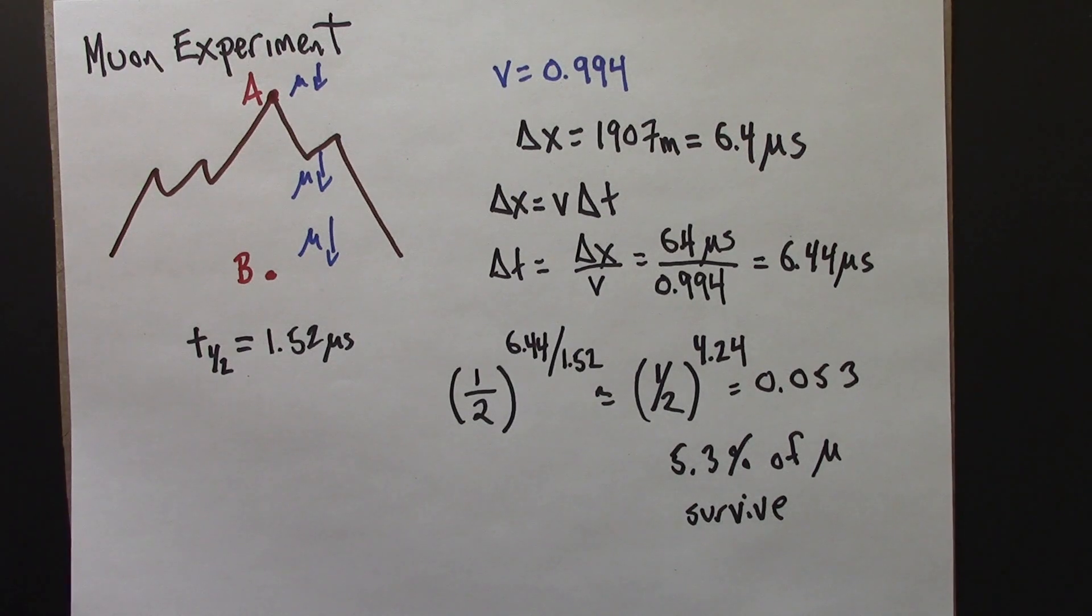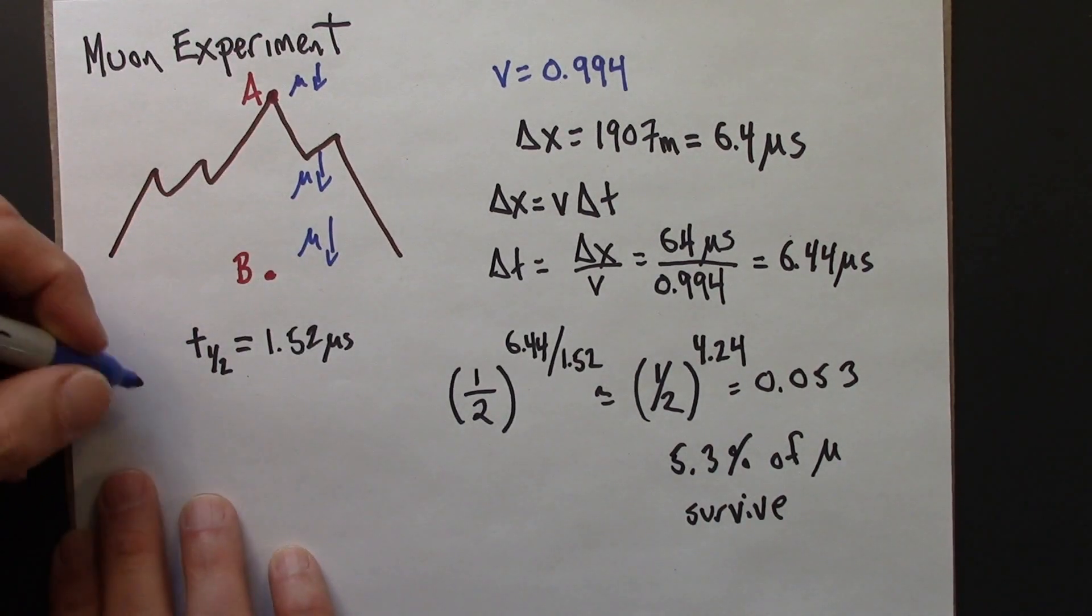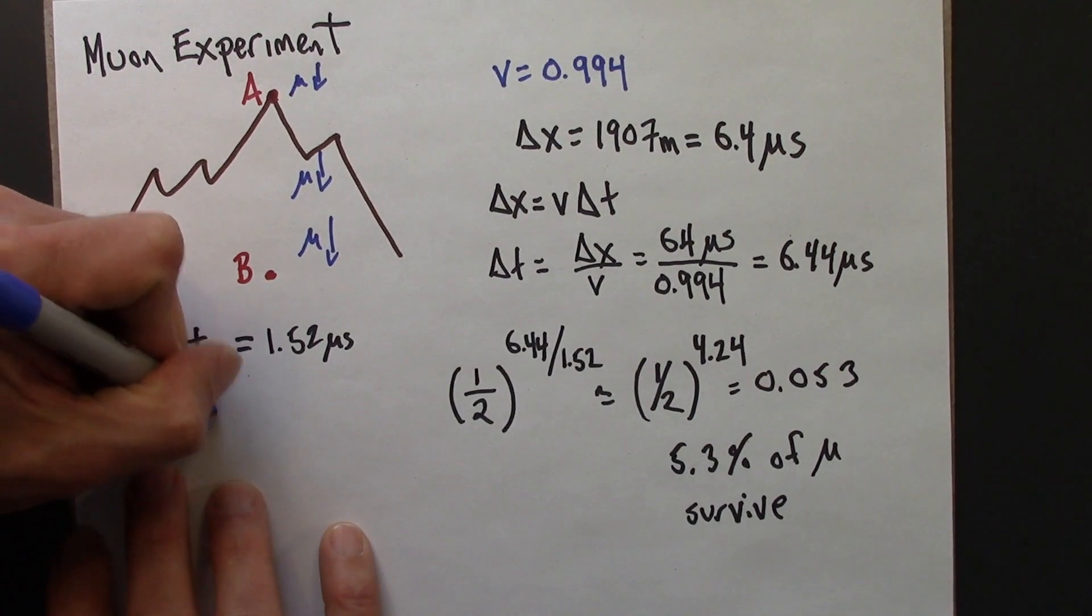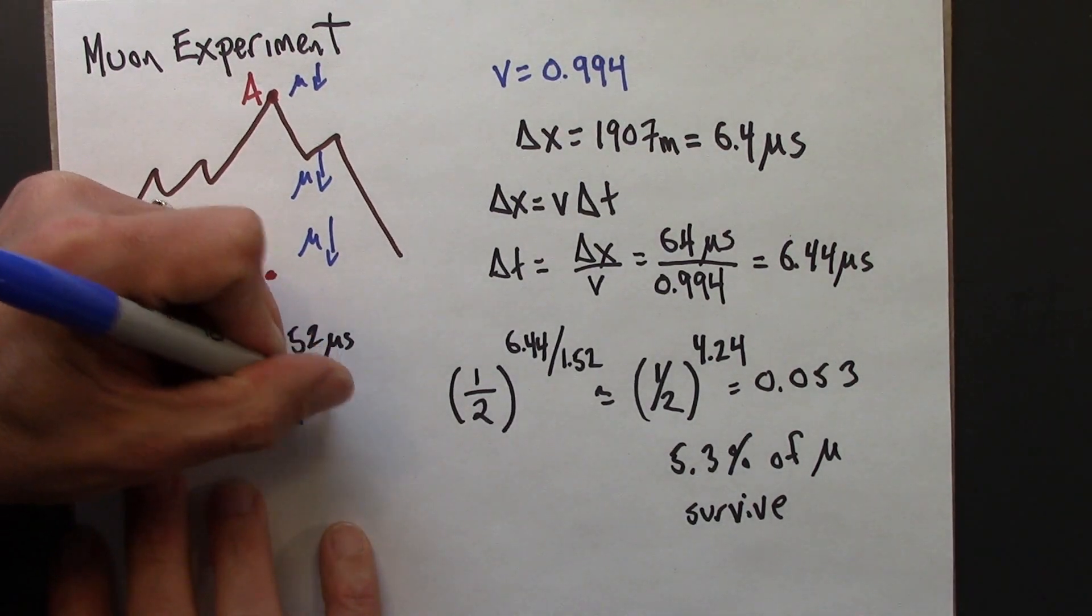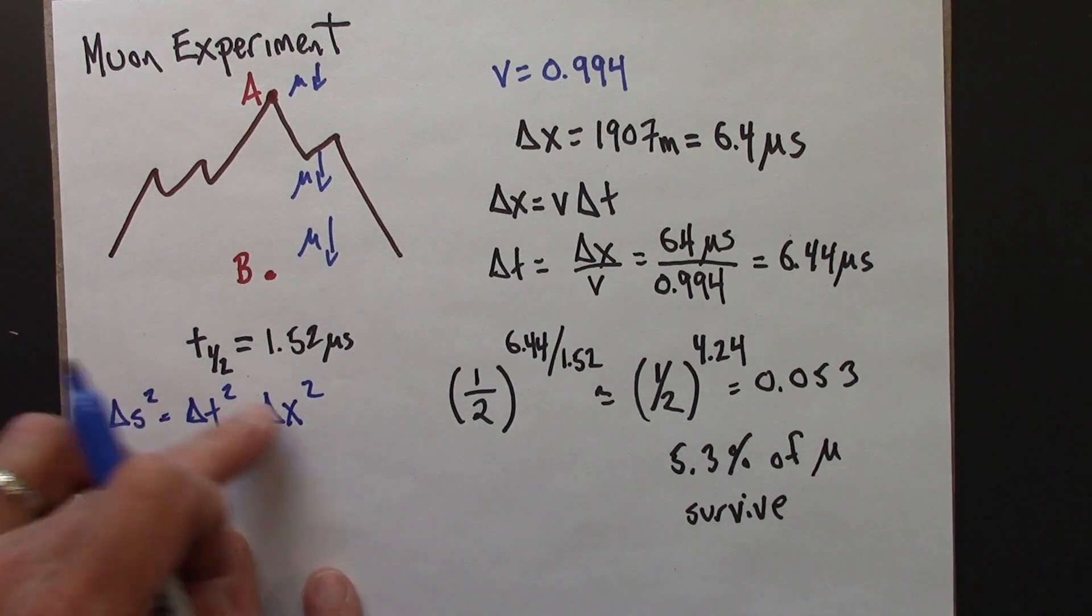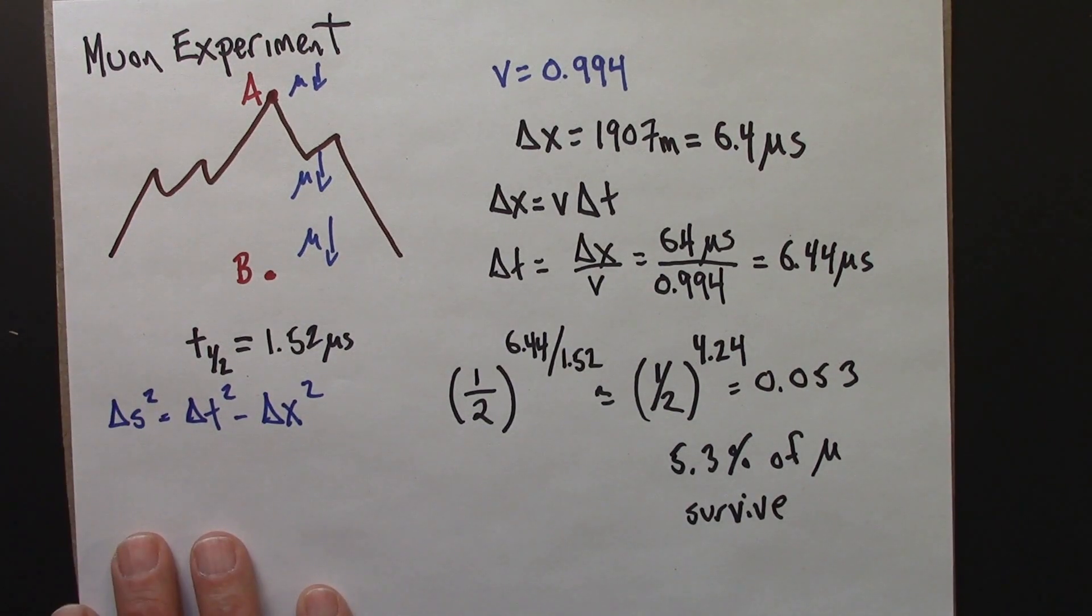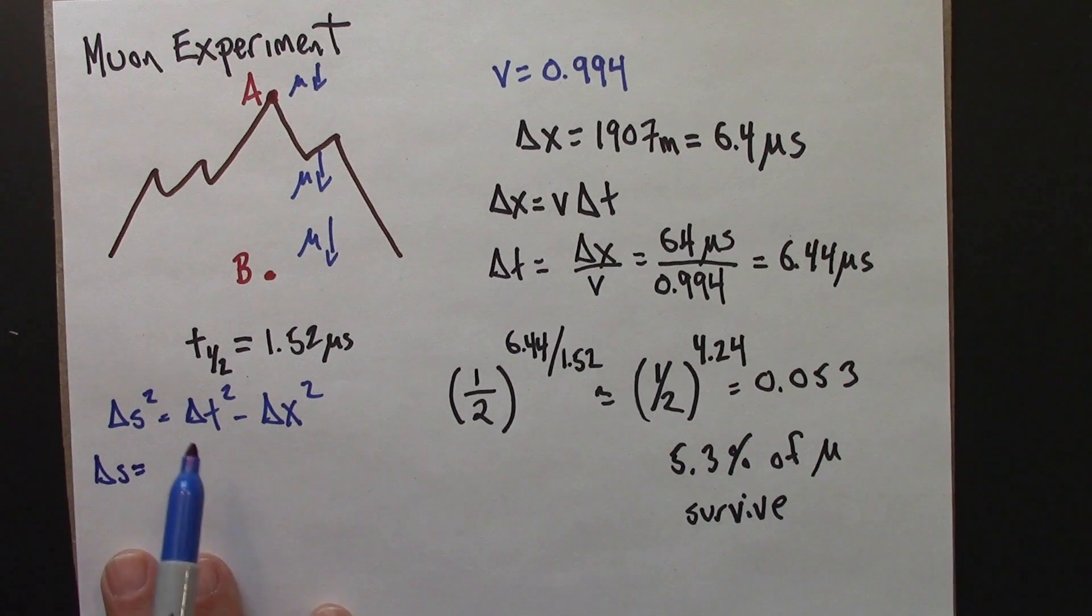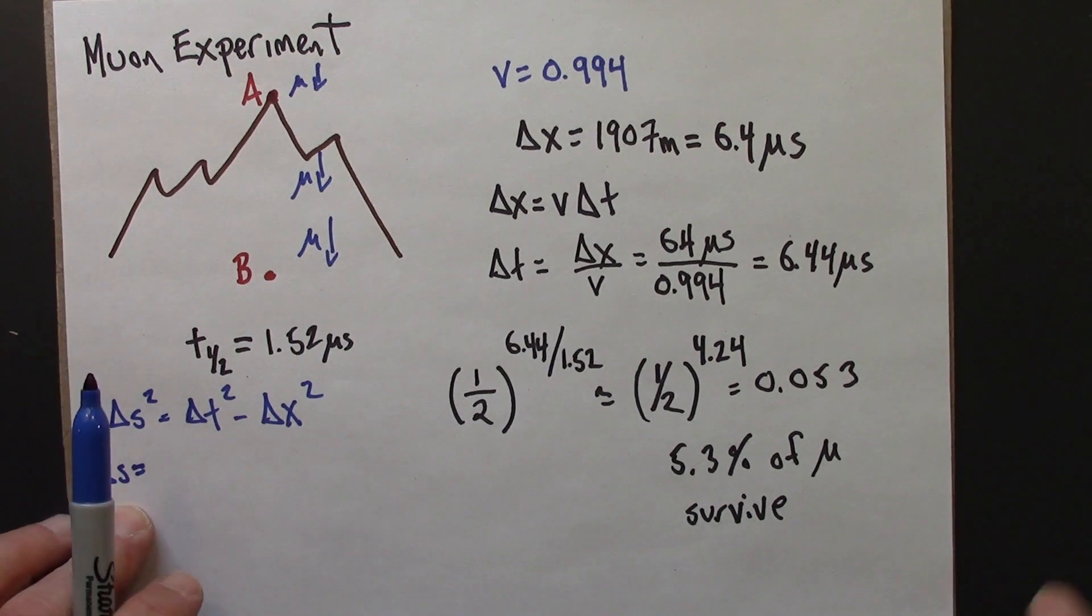We know the formula for the space-time interval. Delta S squared equals delta T squared minus delta X squared. I could square root both sides. We know delta T and delta X. These are measured in the Earth frame, but we can use that to figure out the space-time interval. The space-time interval is the same for everybody. It's a reference frame independent quantity.